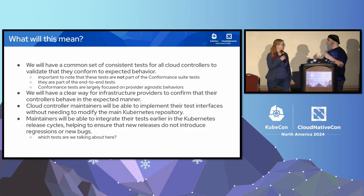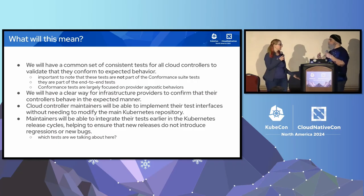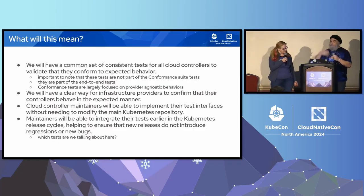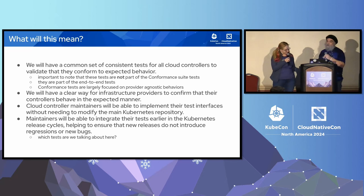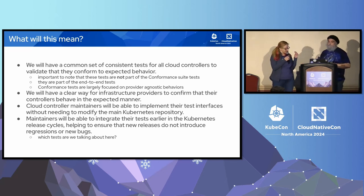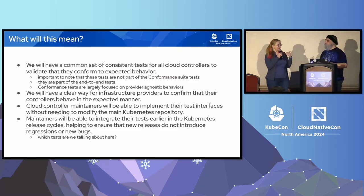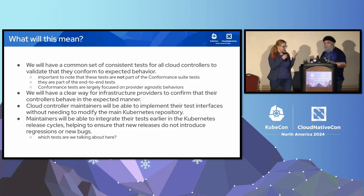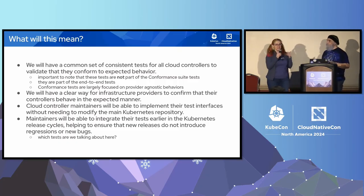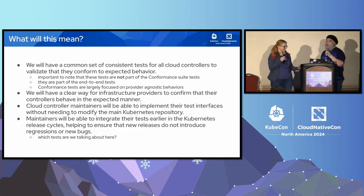Each cloud provider will own an implementation of the interface that allows their tests to run in their cloud provider repo. Those developers and maintainers can keep their own cadence that doesn't necessarily have to be dependent on the Kubernetes repo. They can run the tests on their own, get good results, and bring it back to the community. There are also pathways to involve their tests and infrastructure into the Kubernetes community processes.